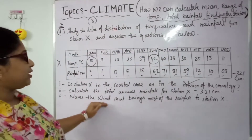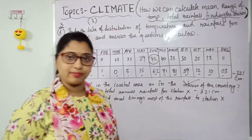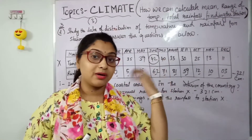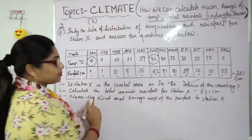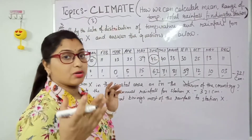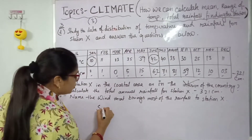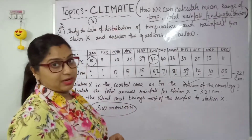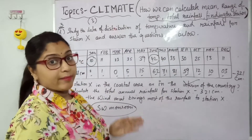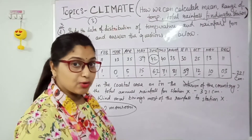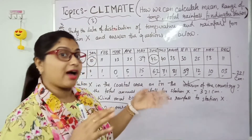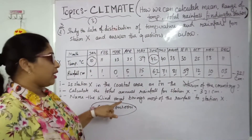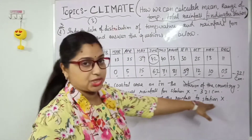Next, question number 3: name the wind that brings most of the rainfall to the station. To answer this you should see the theory, but the main rain-bearing wind in our country is the southwest monsoon. The southwest monsoon basically brings most of the rain to station X.